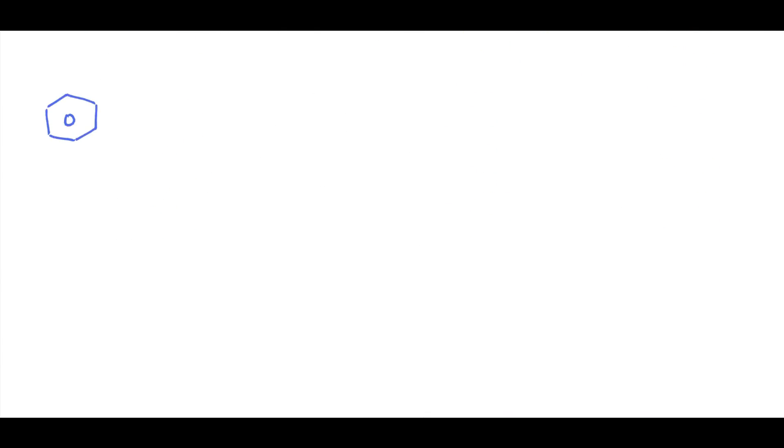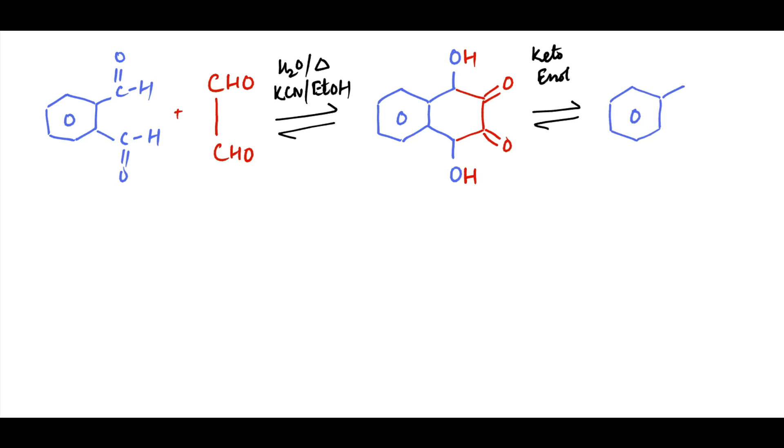Consider the cross-benzoin reaction of aldehyde with glyoxyl in the presence of cyanide catalyst. Glyoxyl acts as donor so that the carbonyl group is retained, whereas the aldehyde acts as acceptor so that its carbonyl groups are changed to hydroxyl groups. This product can undergo keto-enol tautomerization to form tetrahydroxyethylene.